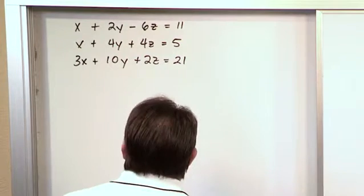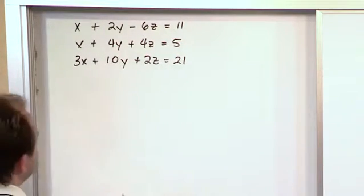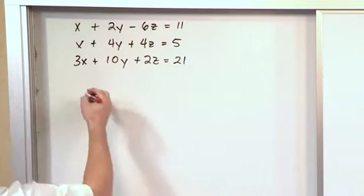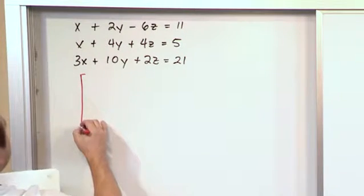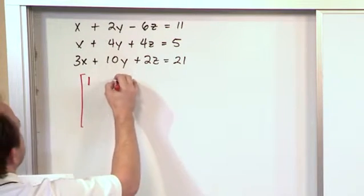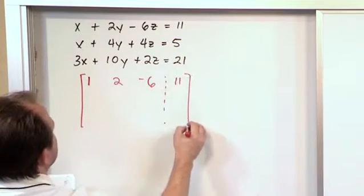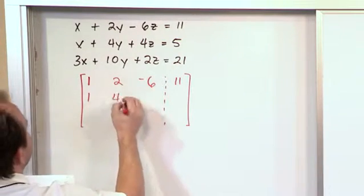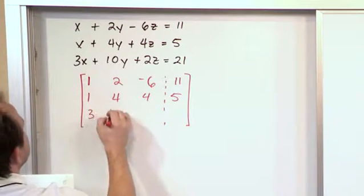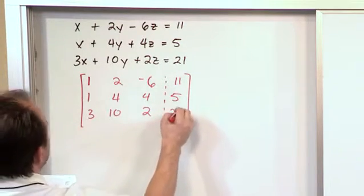Now I'll tell you ahead of time this is also going to be dependent as well. You cannot tell by looking at the system of equations outright that it's going to behave that way. So let's write our matrix: 1, 2, negative 6, 11; 1, 4, 4, 5; 3, 10, 2, 21.